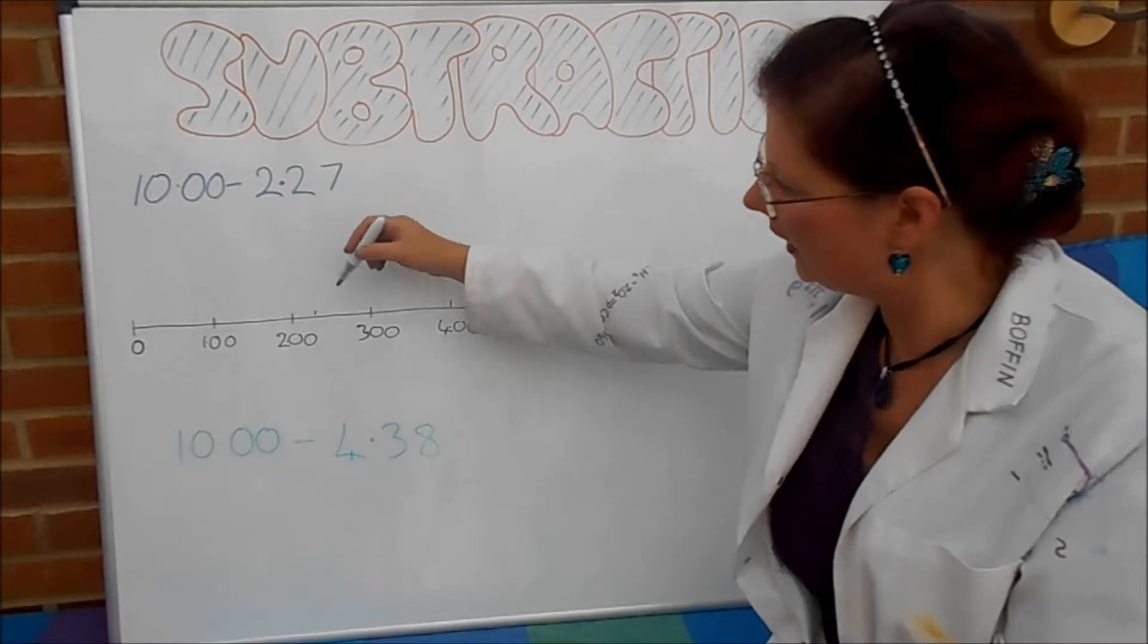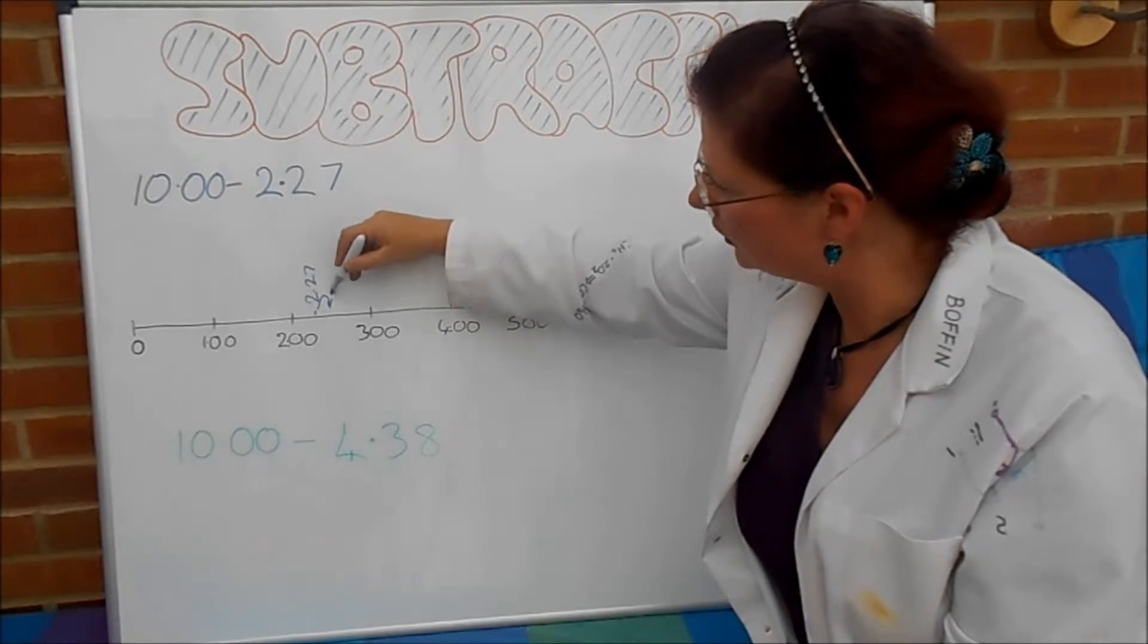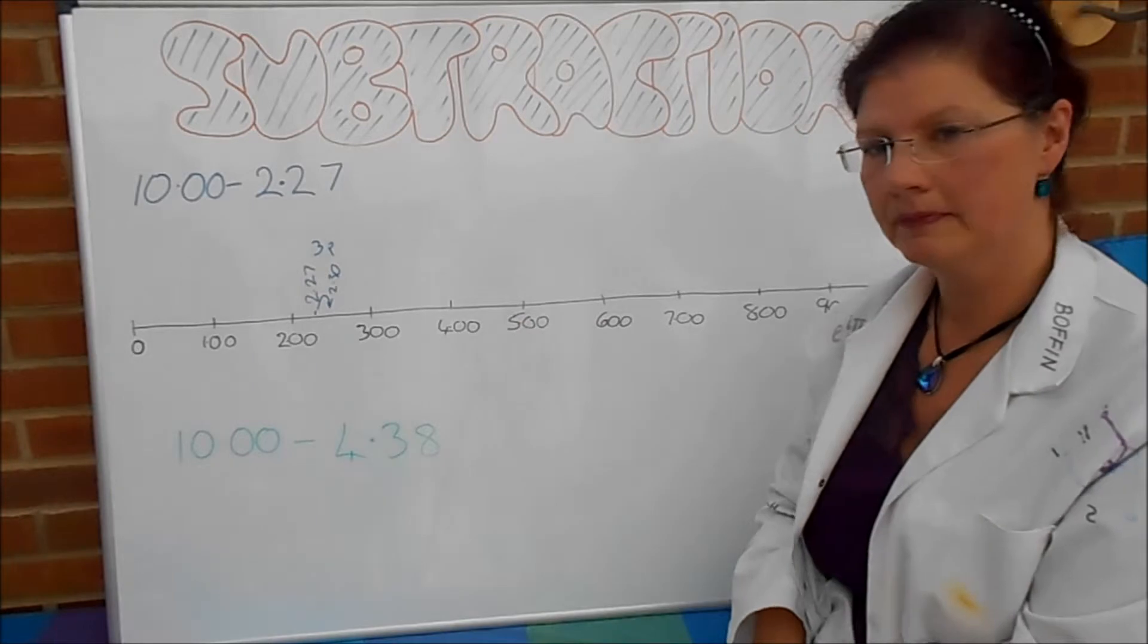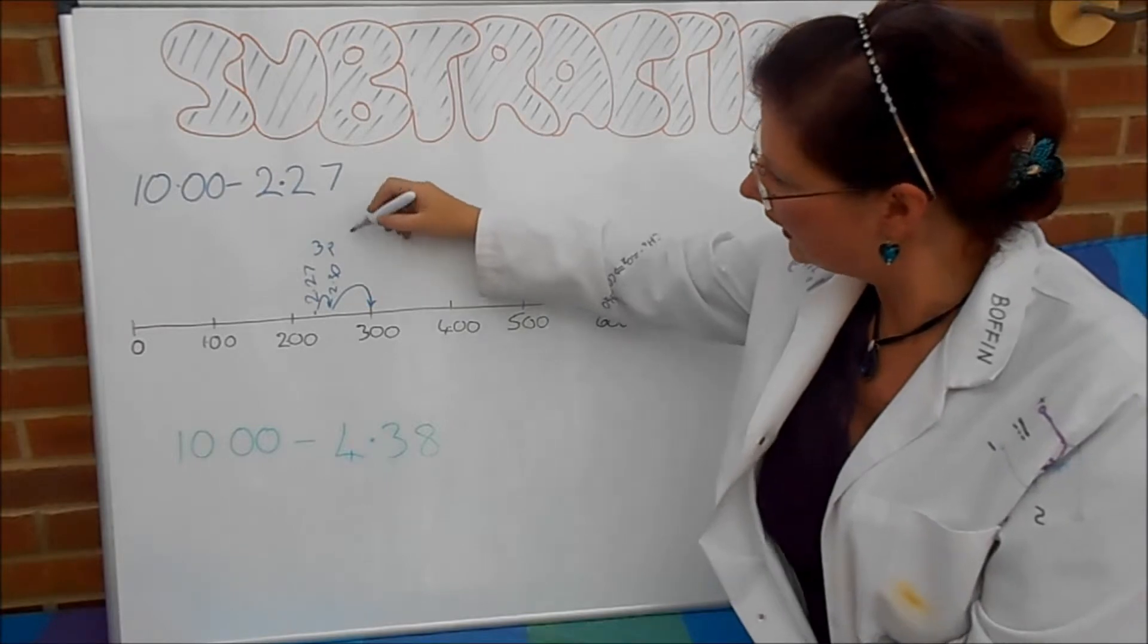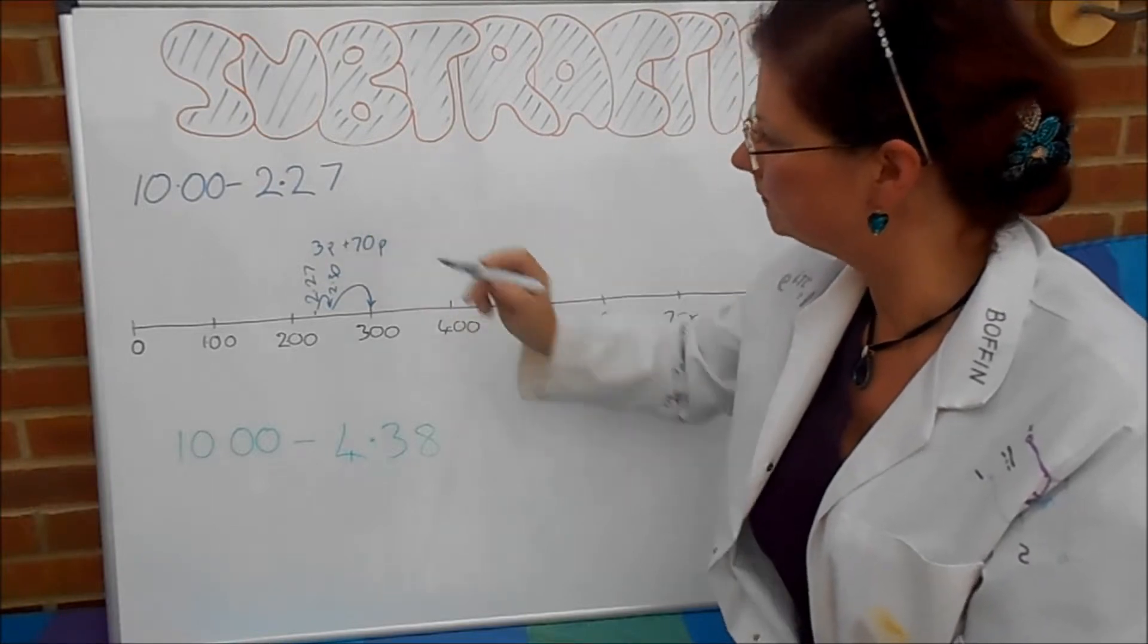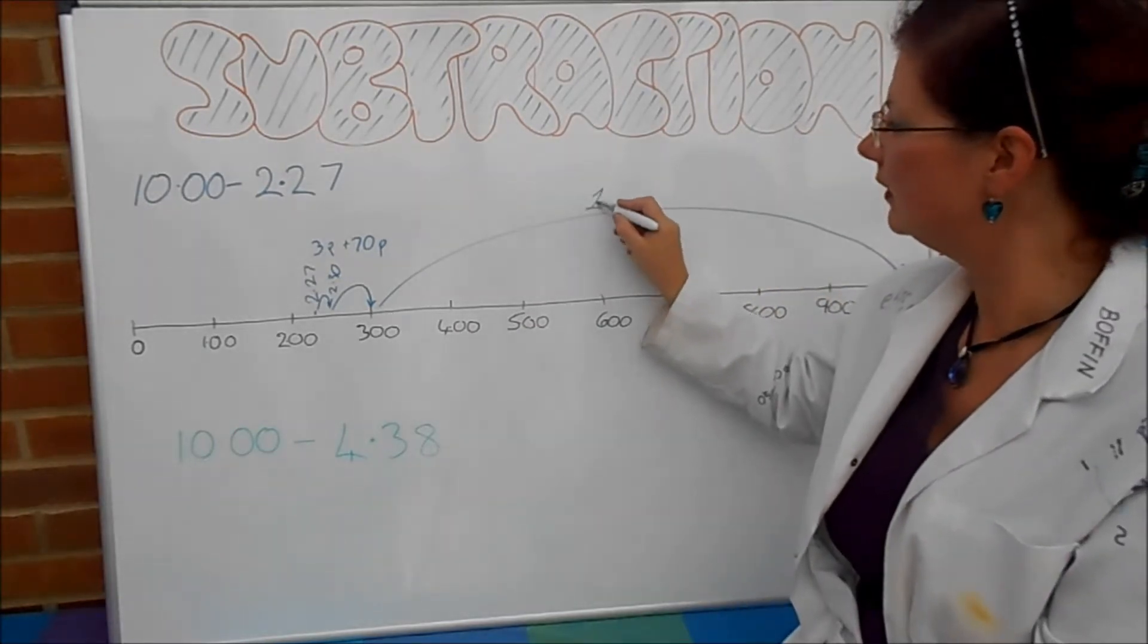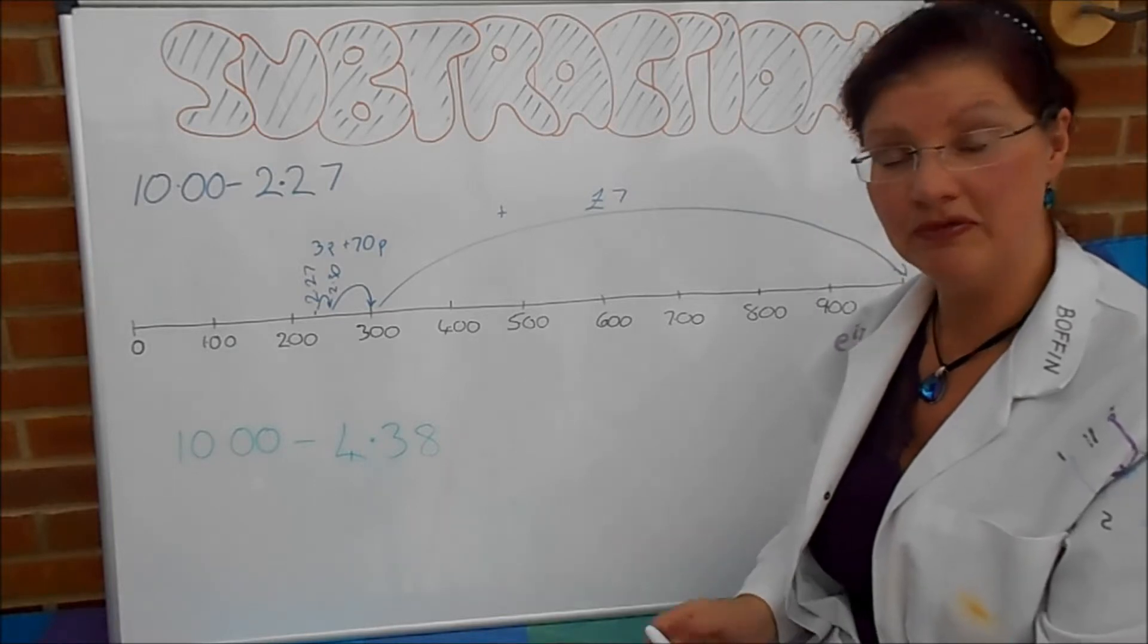Well, first of all, I'm going to jump up, so that's £2.27. I'm going to do a very little short jump to £2.30. And that is 3p. And then I'm going to jump from £2.30 up to £3. And that is a jump of 70p. And then I'm going to jump from £3 all the way over to £10. And that's a jump of £7. So we've jumped by 3p, by 70p, and by £7.